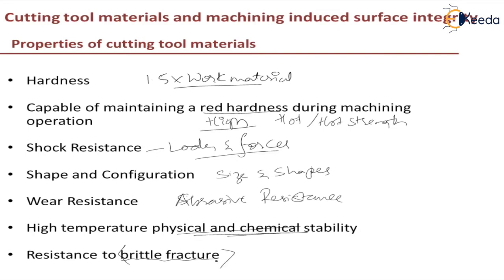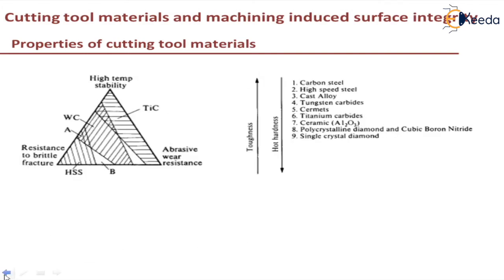All these properties will not be present in one single material. For example, wear resistance, high temperature stability, and chemical stability will not come together in a single material. Titanium carbide has high temperature stability and abrasive resistance, but it has very low resistance to brittle fracture. On the other hand, HSS has high resistance to brittle fracture, but it does not have high temperature stability or high wear resistance. Some materials in between are a compromise of all these properties.